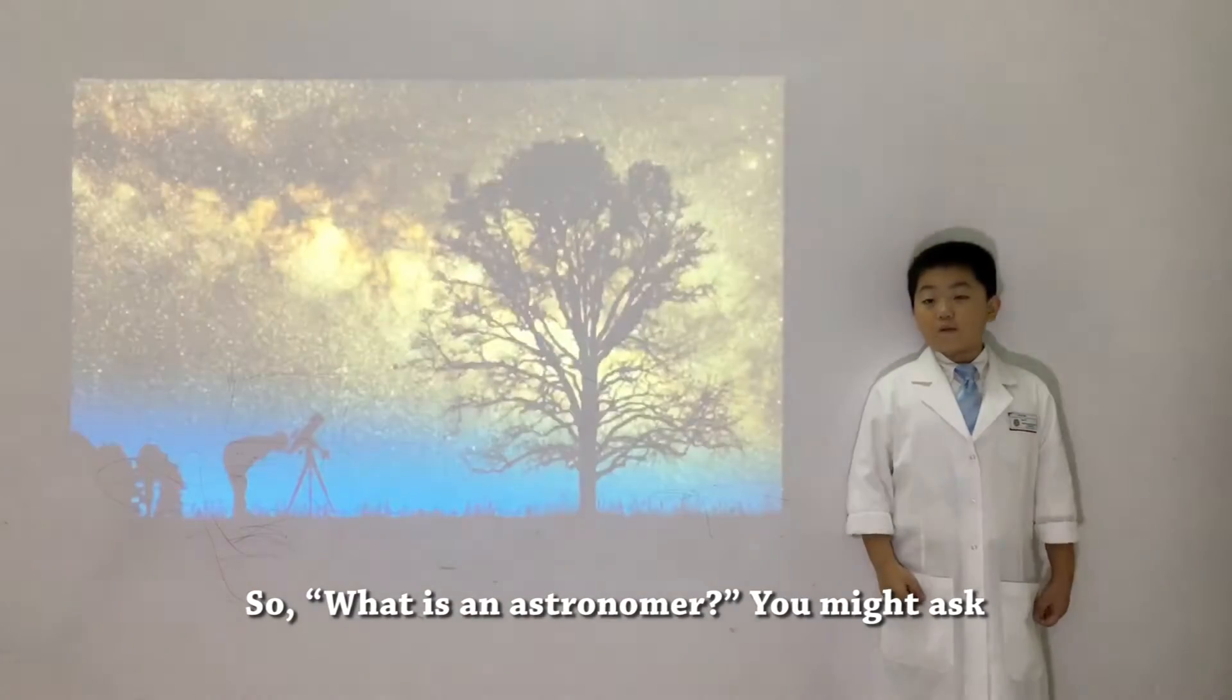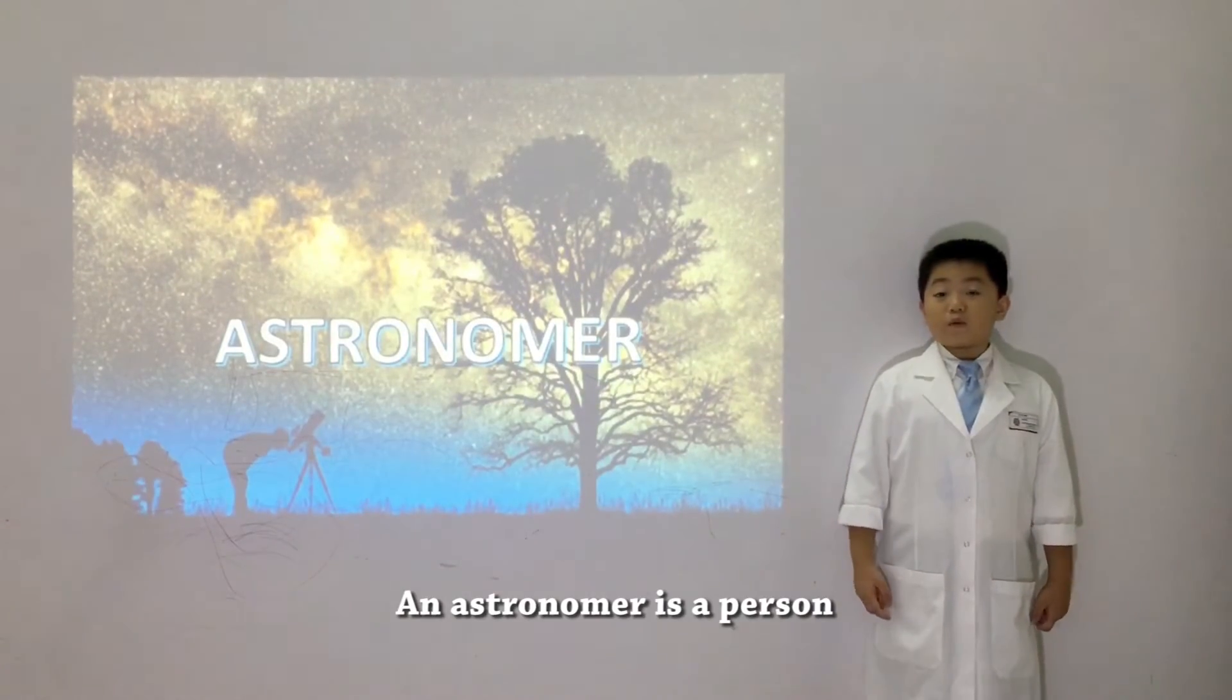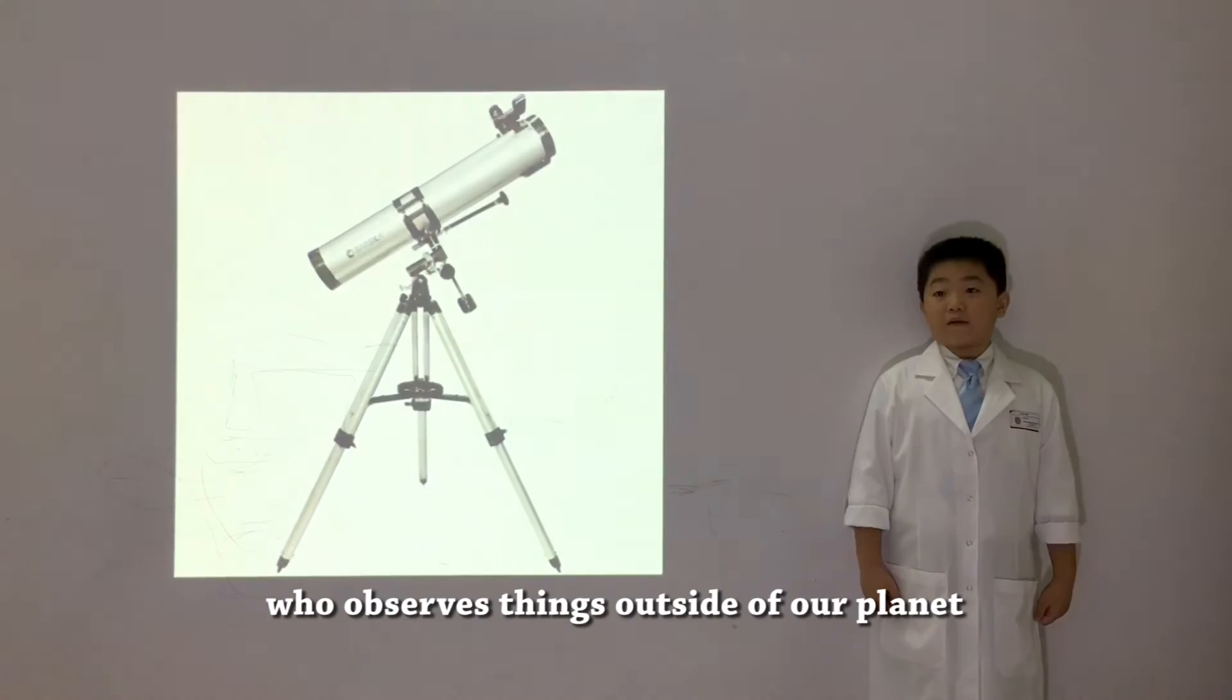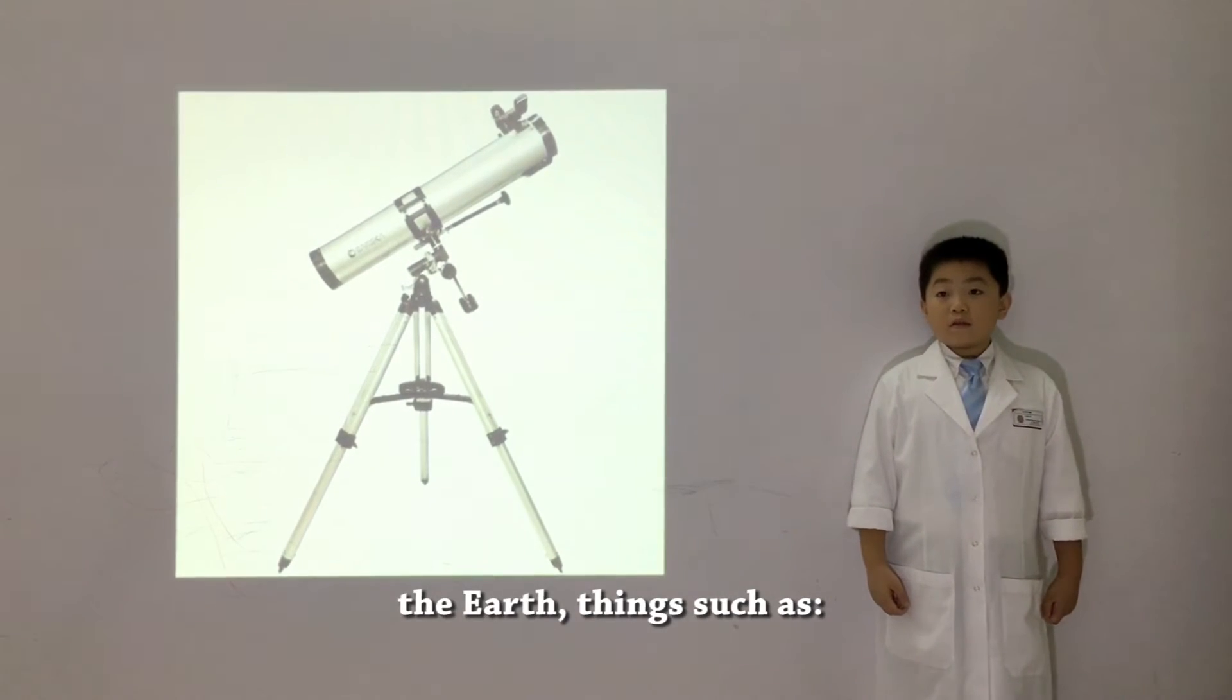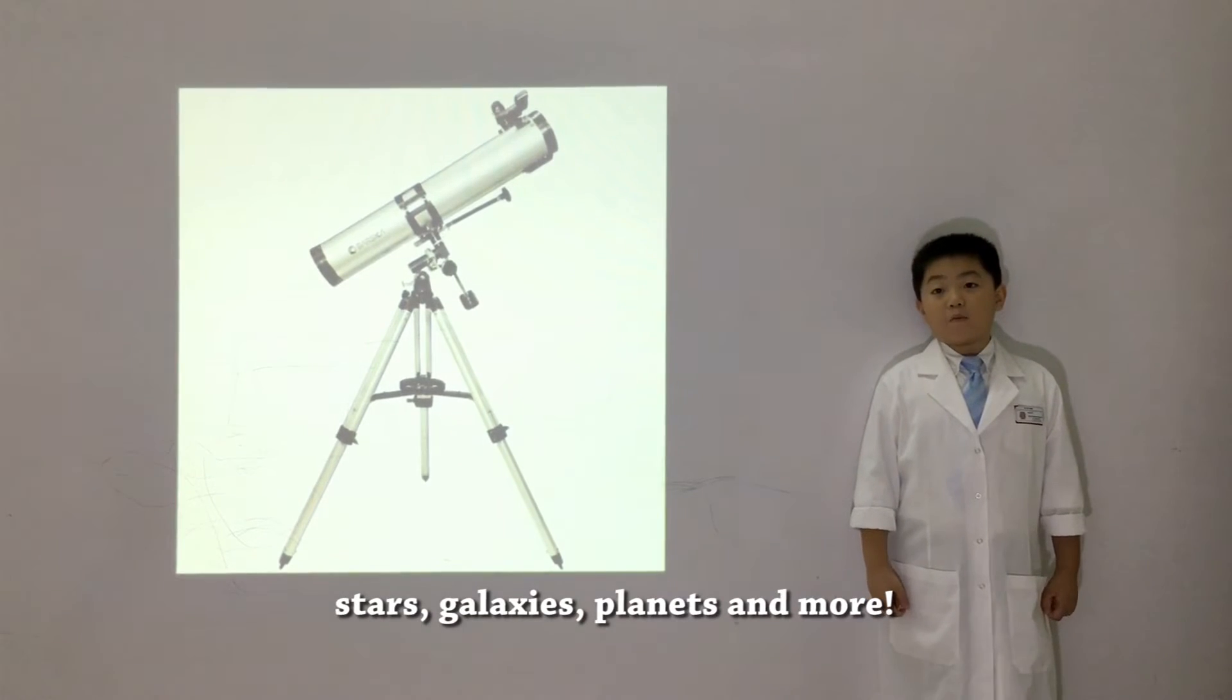So, what is an astronomer? You might ask. An astronomer is a person who observes things outside of our planet, the Earth, things such as stars, galaxies, planets, and more.